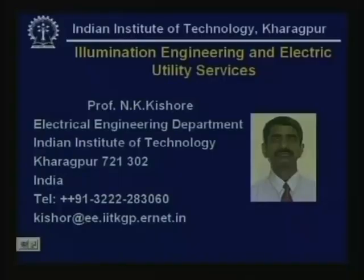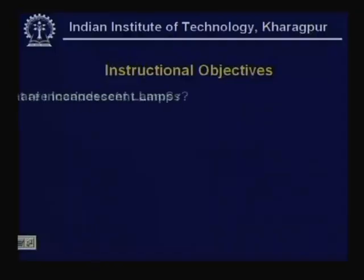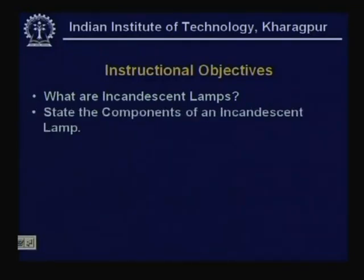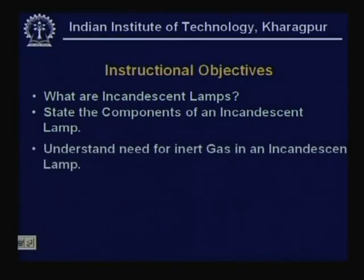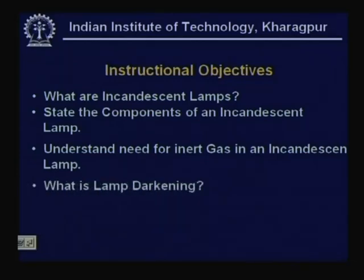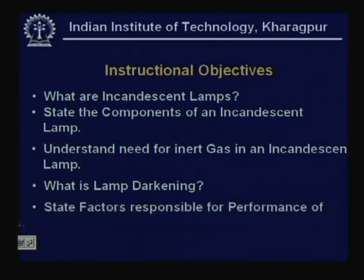Welcome to this course on Illumination Engineering and Electric Utility Services, continuing with the previous lesson. In this lesson we cover: what are incandescent lamps, the components of an incandescent lamp, the need for inert gas in an incandescent lamp, what is lamp darkening, and the factors responsible for the performance of an incandescent lamp.